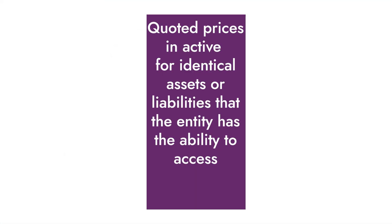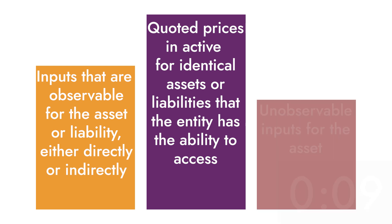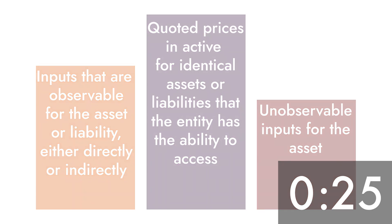We've got three levels in that hierarchy. Level one is any time you're dealing with observable market prices, using that price times quantity approach. Level two is when you have observable inputs but you're making some adjustments — think about using matrix pricing to fair value your bond portfolio; that's likely going to be a level two. And then finally, level three covers anything that uses unobservable inputs.